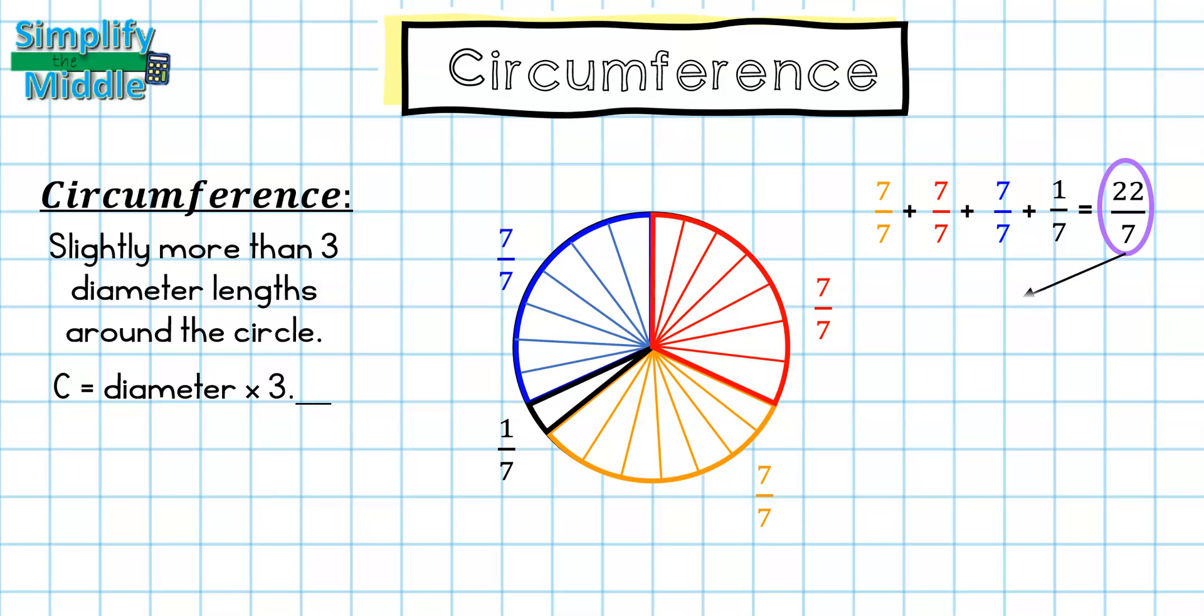When I add those together, I might find something that looks familiar: 22 sevenths. That is our approximation for pi. If I divide 22 by seven, I get approximately 3.142, and if I round that to the hundredths place I get 3.14. Coming back to our formula, I could replace this blank with 0.14.